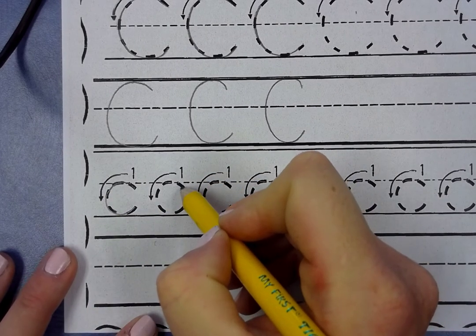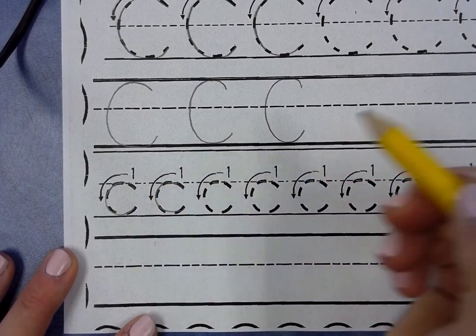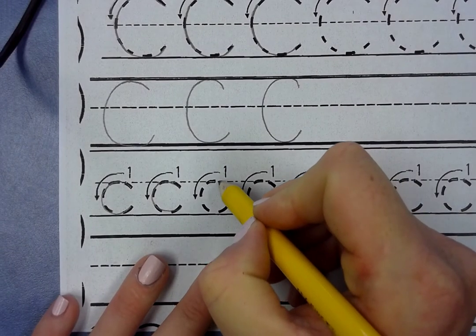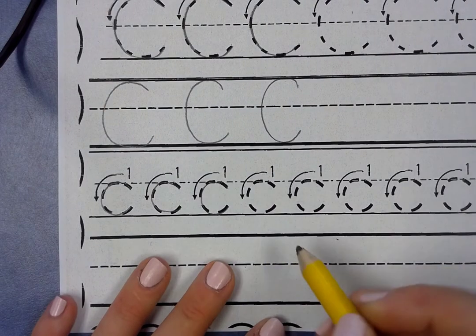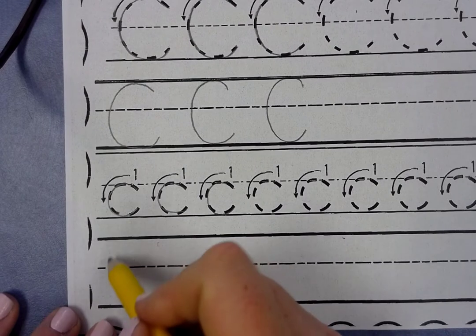So under the dotted line, to the dotted line, around to the grass, and down. Okay, so right under the dotted line, up to the dotted line, go down to the bottom, and around. I want you guys to finish each one of these C's. Then you're going to do your C's at the bottom.